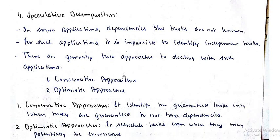Finally comes speculative decomposition. In this, nothing is fixed; we don't know what our target is. So we use two techniques to proceed. The first is the conservative approach, and the second is the optimistic approach. In some applications, dependencies between tasks are not known, so it is impossible to identify independent tasks.